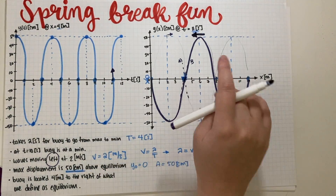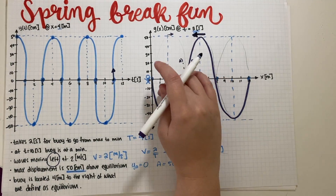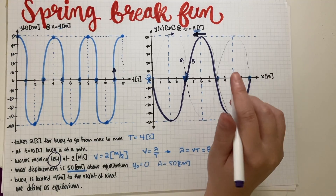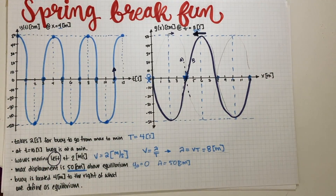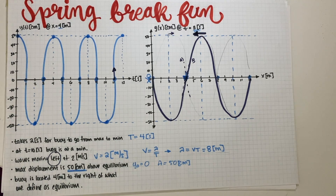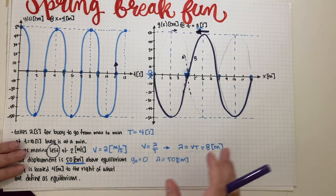That is how we resolve the up-down ambiguity — by checking consistency with the wave direction and the time-domain graph. Both graphs are 100% complete. Now let's move to Part B: calculate the phase constant for this wave.